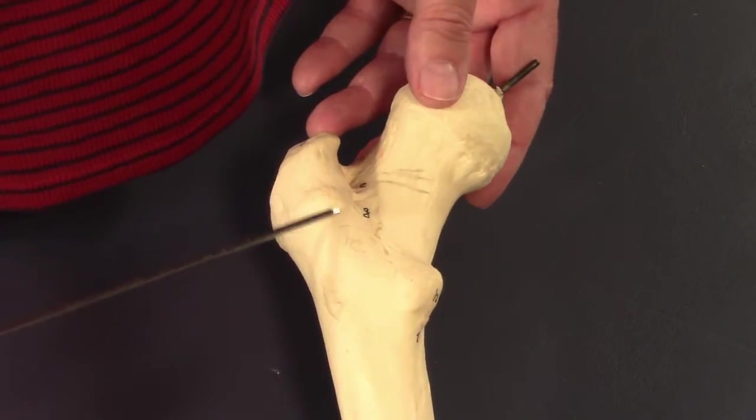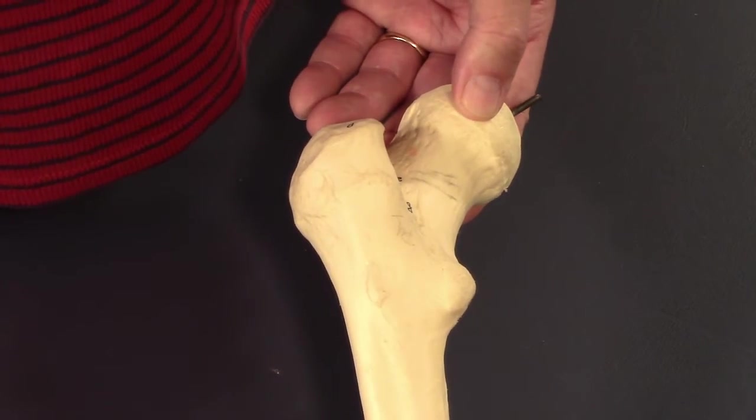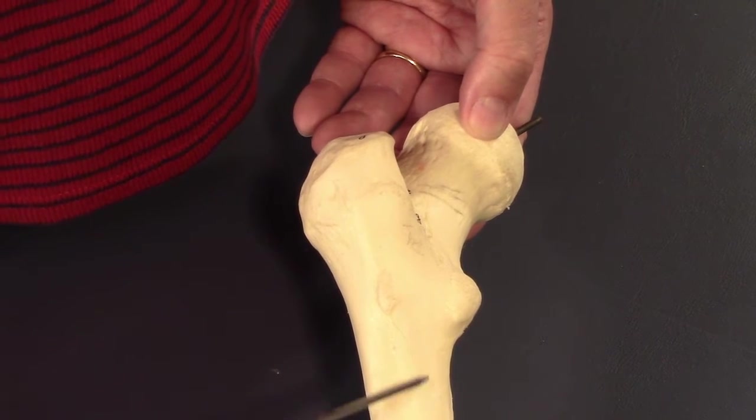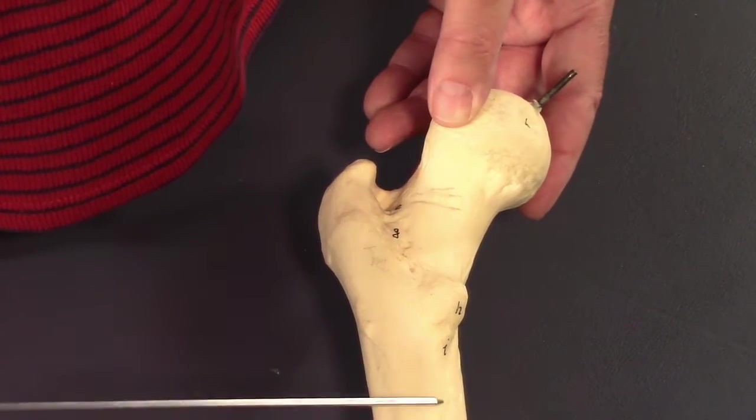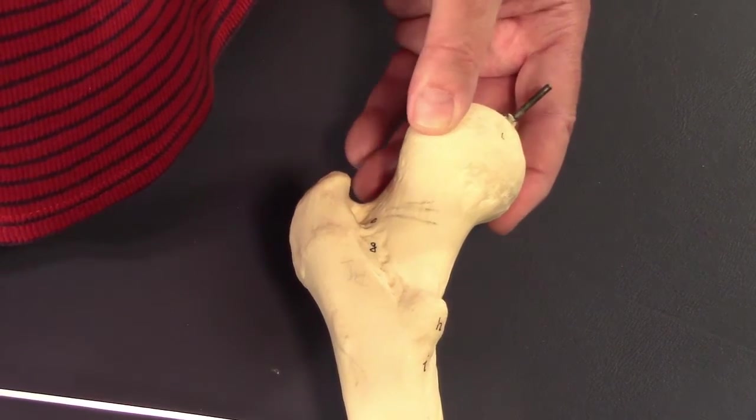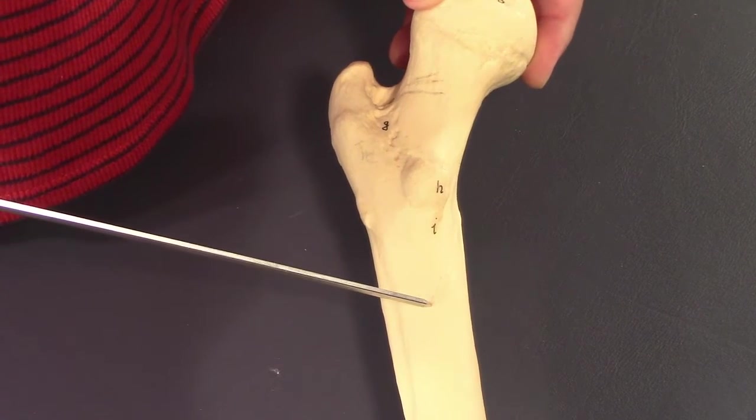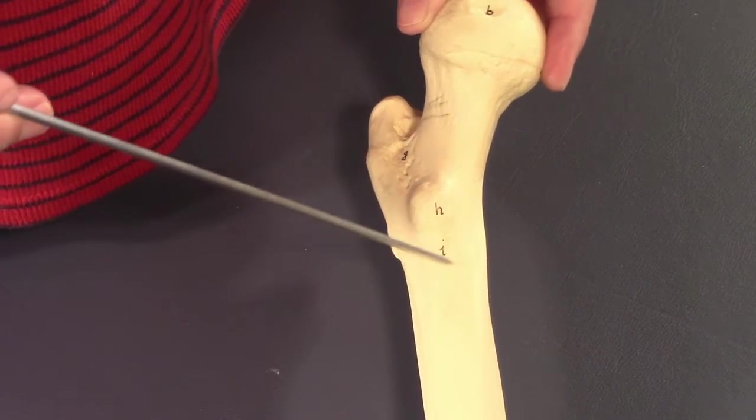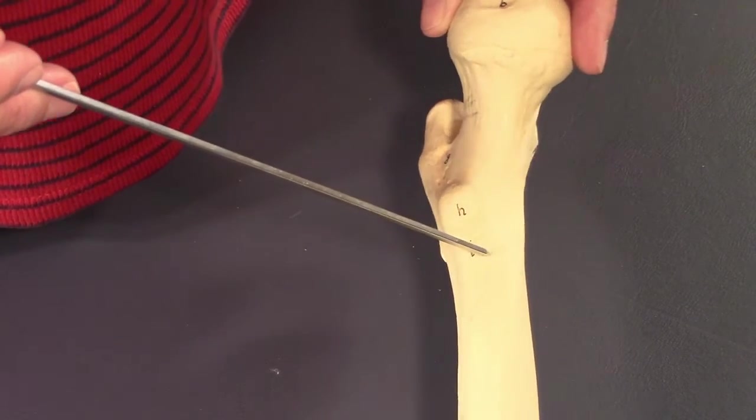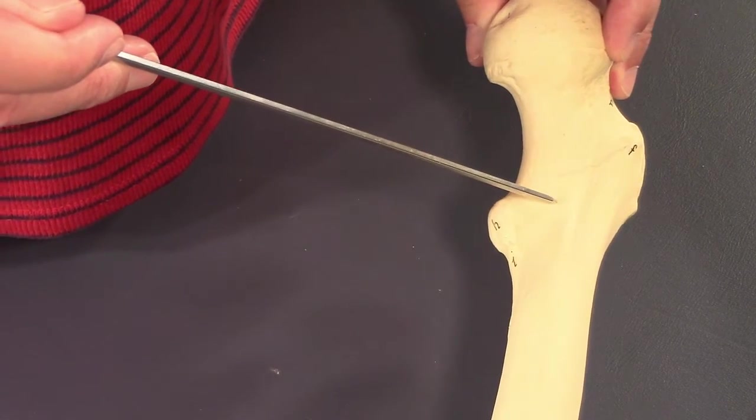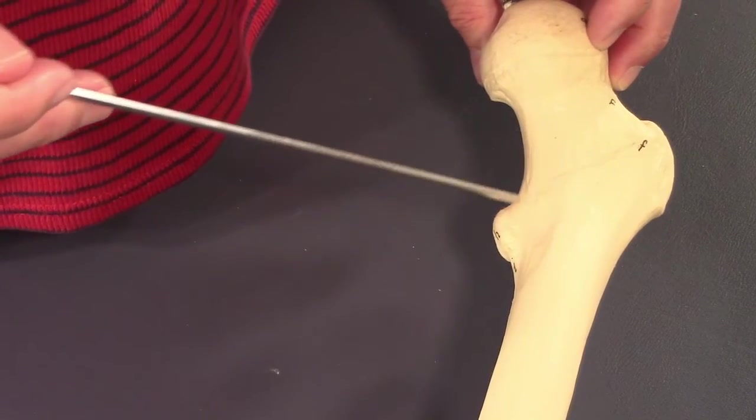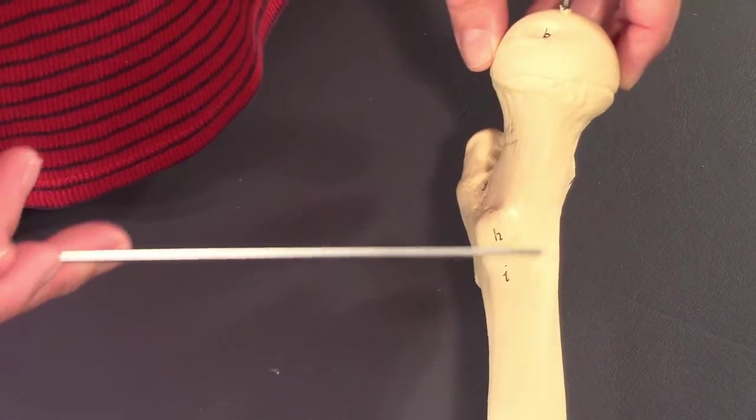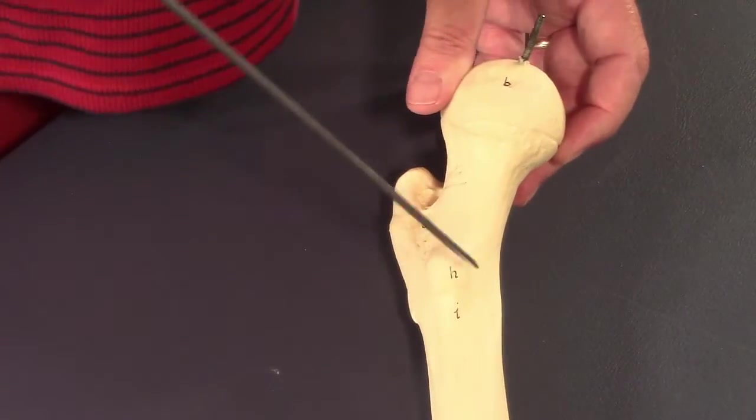We talked about how the gluteal line kind of morphs into the lateral lip of the linea aspera. Now what about the medial lip? The medial lip is coming up here. Here's the medial lip coming around. And it actually wraps around the back here. In this region here right under the lesser trochanter, this is the spiral line. On the specimen it's very subtle. The spiral line actually morphs into the intertrochanteric line on the back.